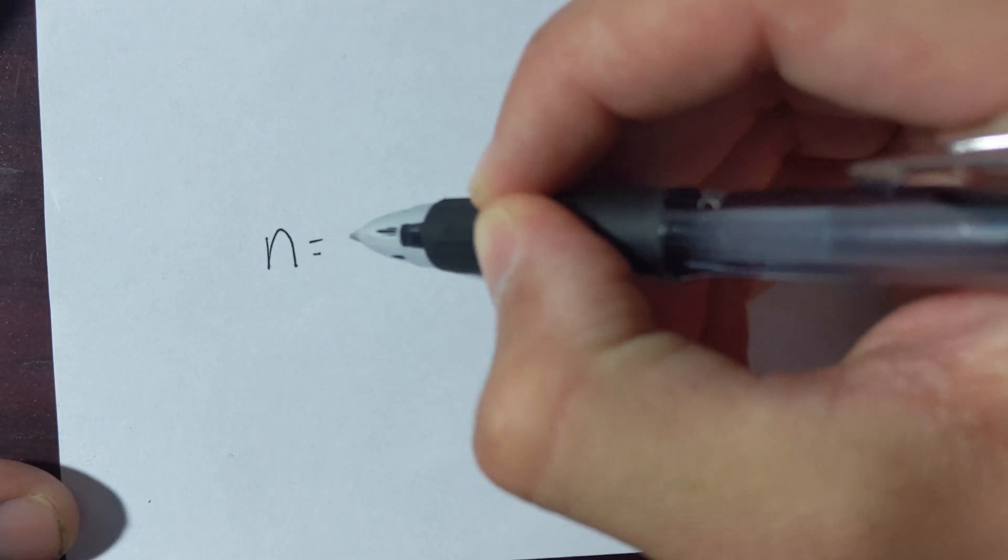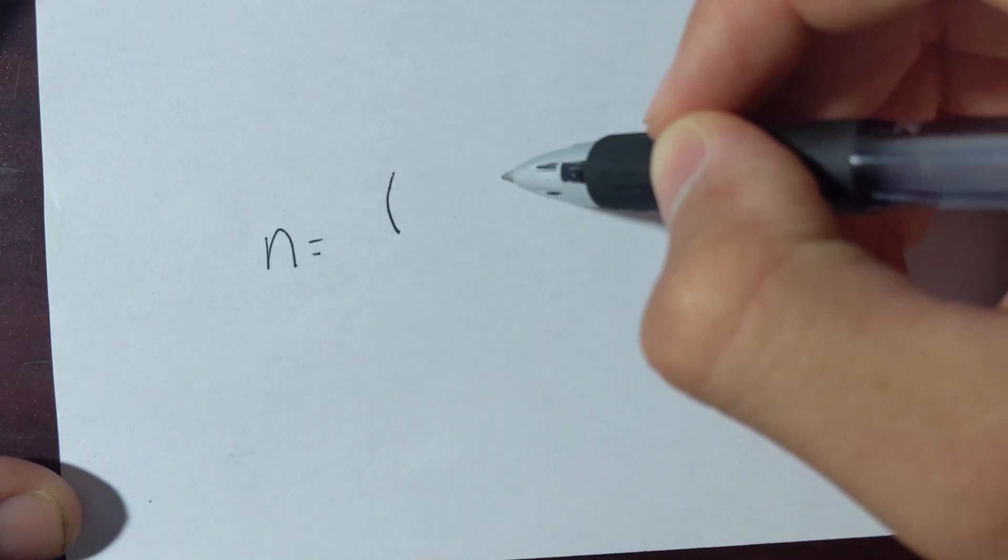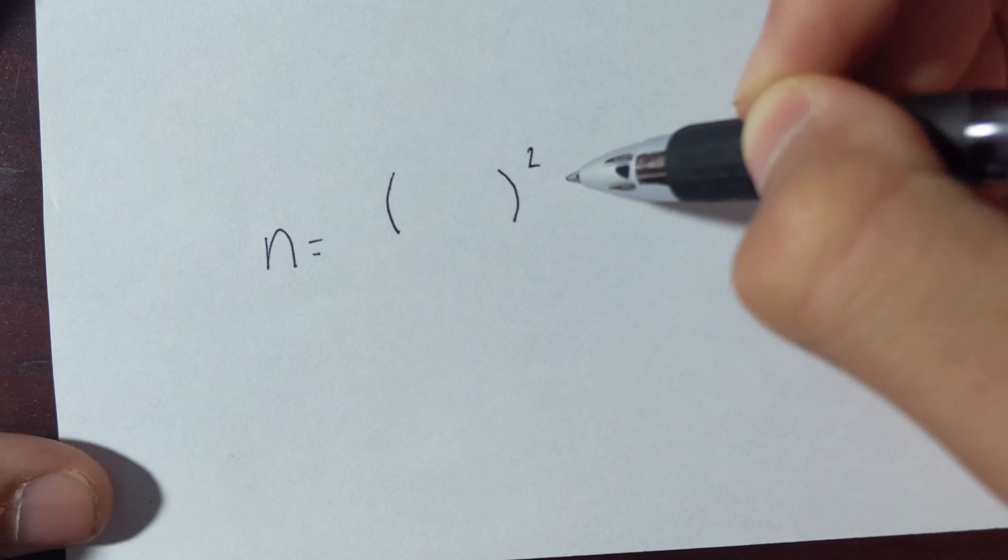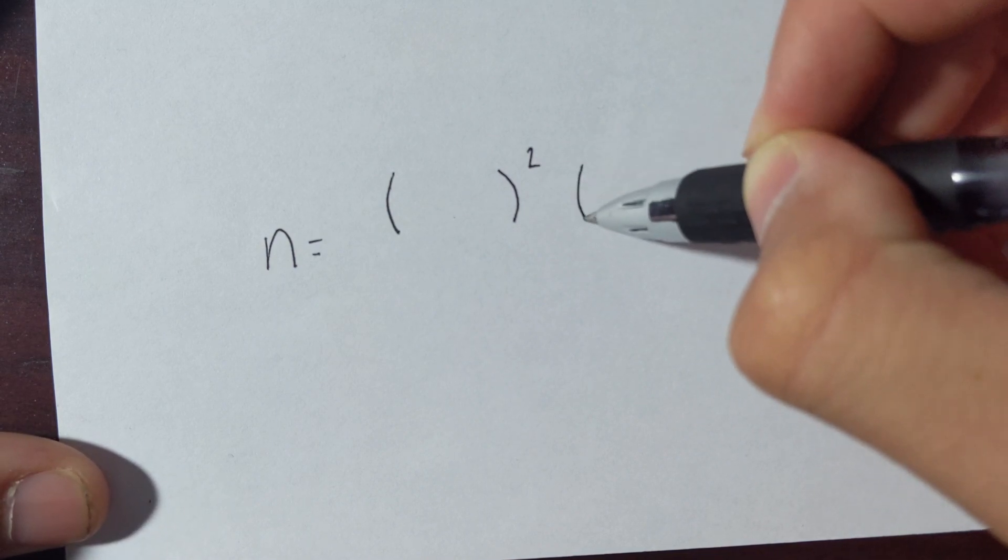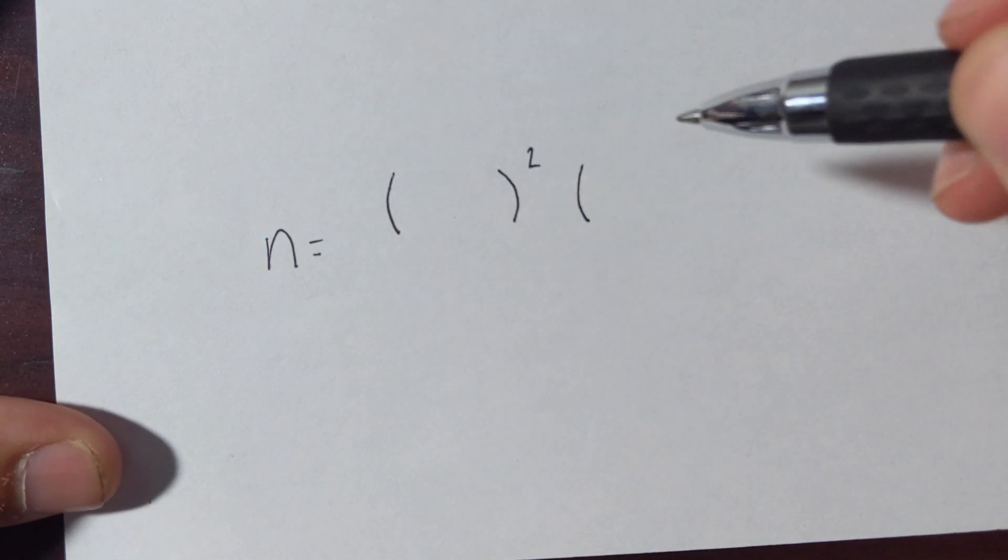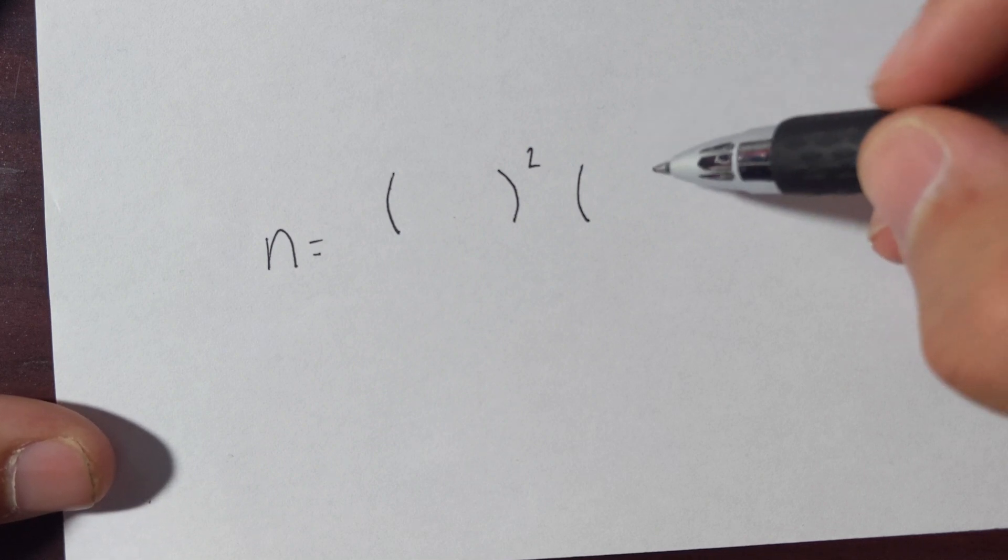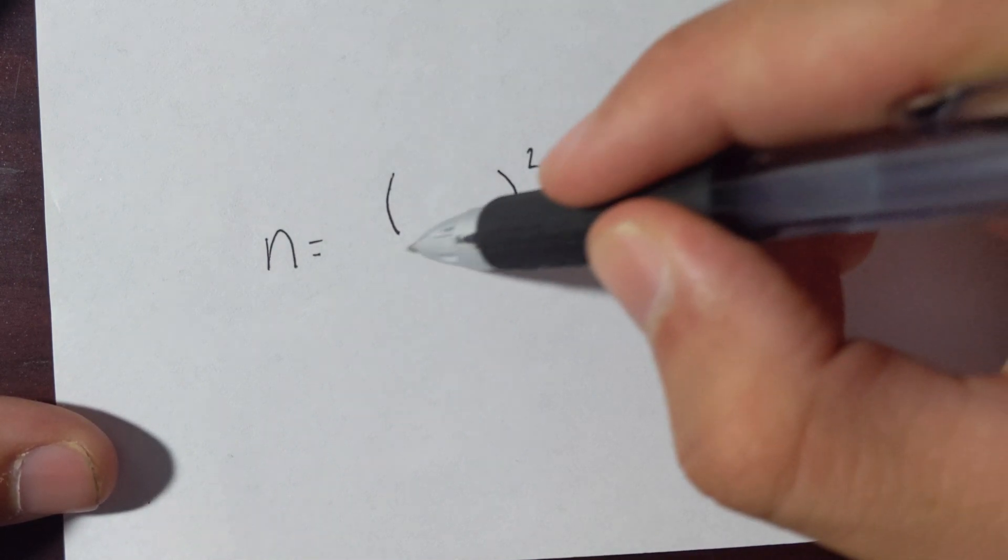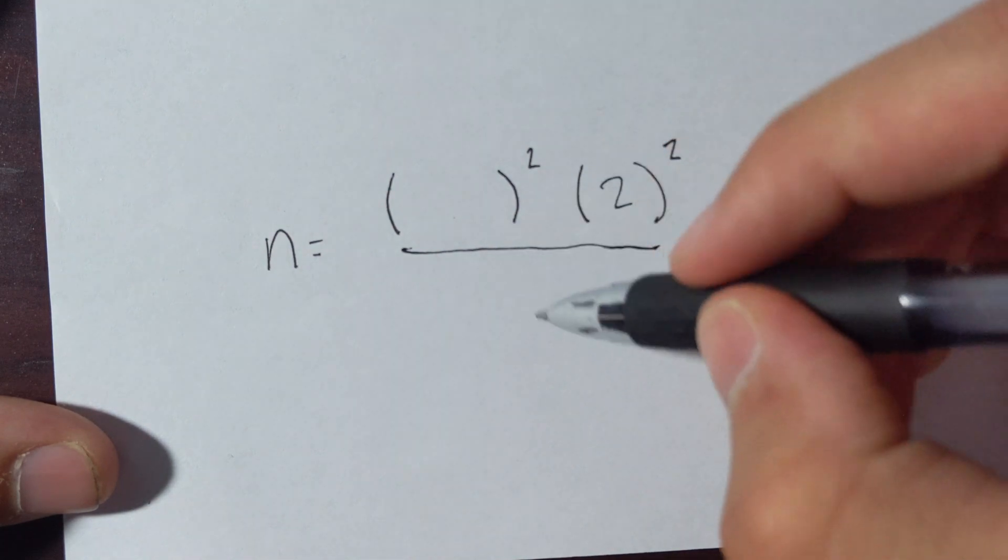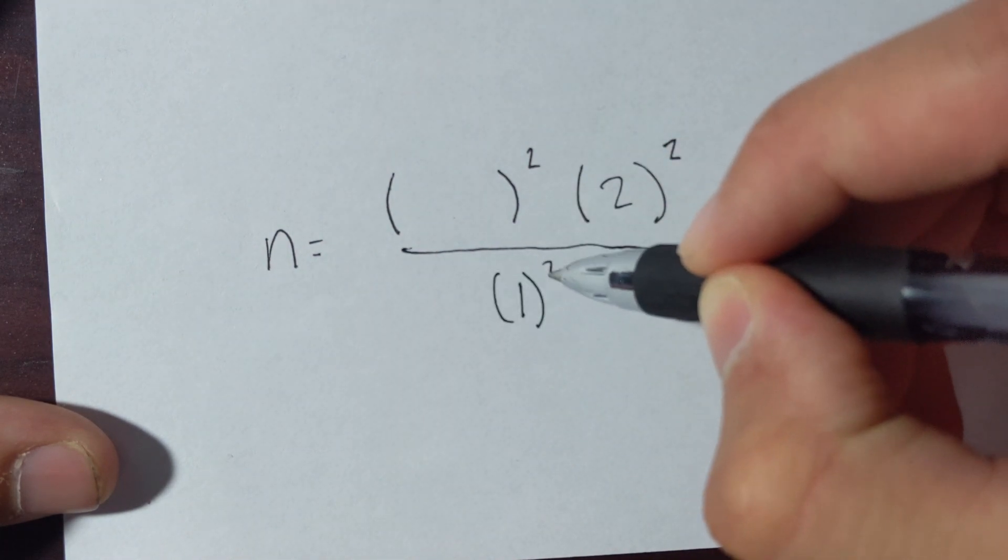So our n, again, we'll find that z value in the table. But then we have a standard deviation of two pounds. So that's squared. And then we only want to be off by one pound. So our error is one pound squared.